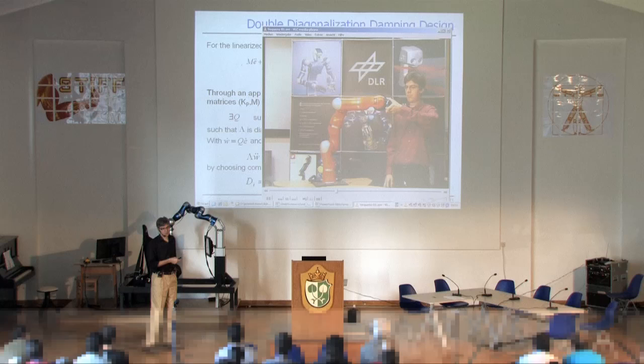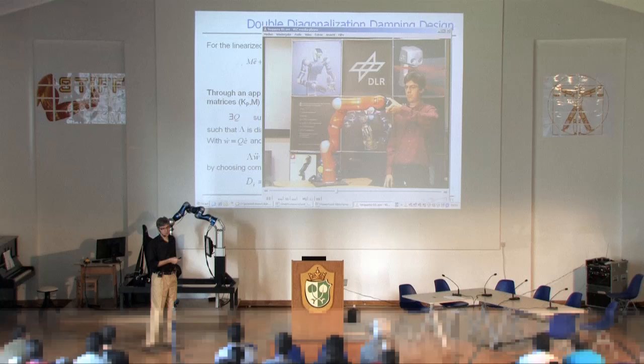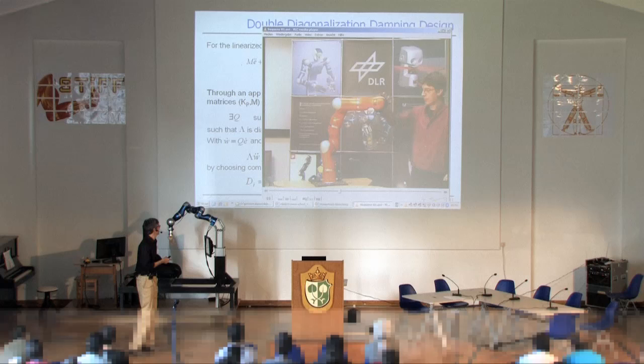This is what happens if you use just a Euler angle representation and have some singularity at 90 degrees. That's the singularity at beta equals 90 degrees from some Euler angles. And this is the Quaternion-based implementation, here now for a very small stiffness, almost zero stiffness.